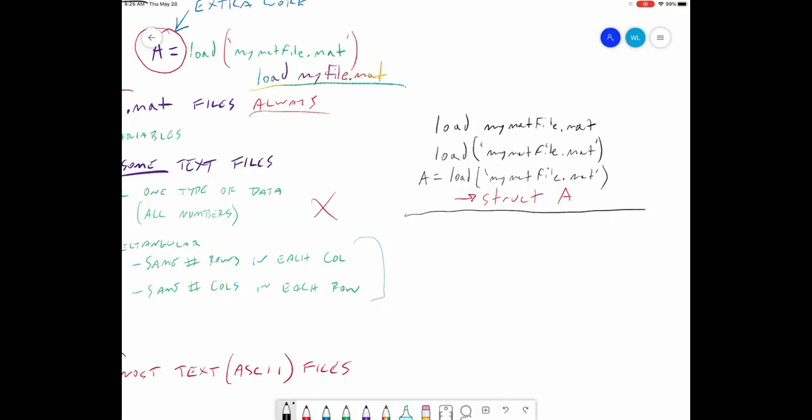For text files, if you're using load, this command is going to take the numbers that are in the text file. This is assuming that the text file contains one type of data and it's rectangular. It's going to take all the data in that text file and save it into an array called mytext. So whatever the file name is, it'll take that, lop off the dot text and put everything into that array.